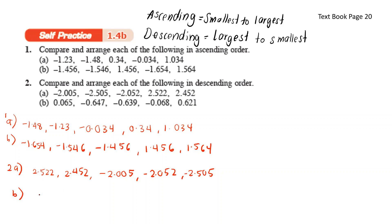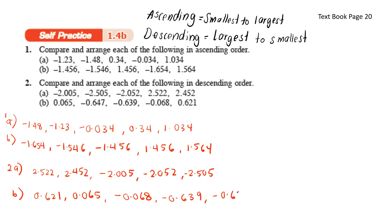For b, the biggest number is 0.621, then 0.065, then negative 0.068, negative 0.639, and lastly negative 0.647.